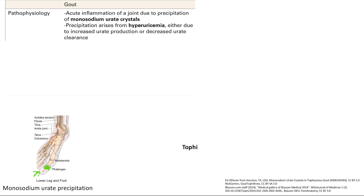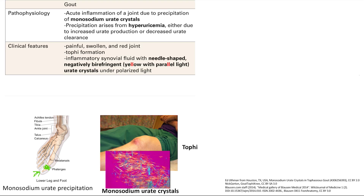With inflammation, your clinical features are going to be classic. Classic symptoms of inflammation include pain, swelling, redness, warmth — all of that. So you're going to see all of that in a single joint. You're also going to get tophi formation, which I've illustrated in this picture here — it's big red inflammation.